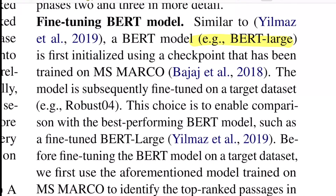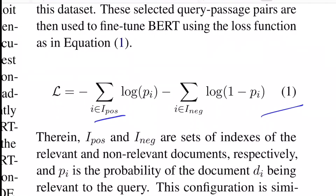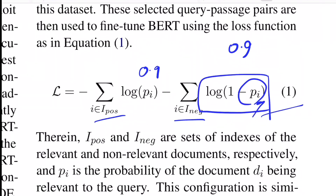They use the BERT Large model and initialize it using a checkpoint trained on MS MARCO — a dataset from Microsoft where you have a query and a list of passages, and against every passage a label of 0 or 1 telling whether the answer was found for a given query in that passage. So you have a boolean label against each passage as the objective function. They initialize the model with that checkpoint and then fine-tune it on the Robust04 dataset. The loss function uses I_POS for indices of positive sentences and I_NEG for negative. If a sentence scores 0.9 as positive, the log value tends to 0. Similarly for negatives, if P_i tends to 0, then log(1 - P_i) also tends to 0, minimizing loss for both positive and negative samples.